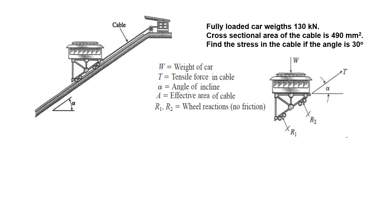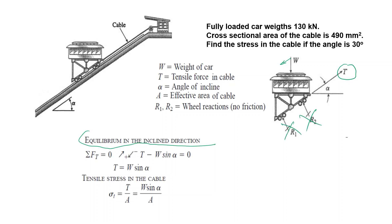First, free body diagram: forces acting on the car are weight, support forces on both wheels, and the tension in the cable. What we do is write the equilibrium in this inclined plane. In this direction we have the component of W. These two support forces don't have any components in that direction, so T minus W sin α equals zero.